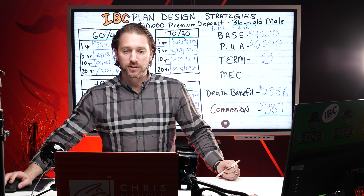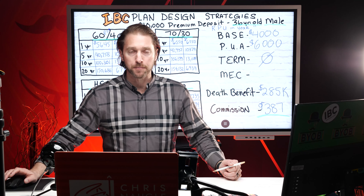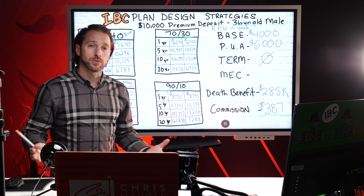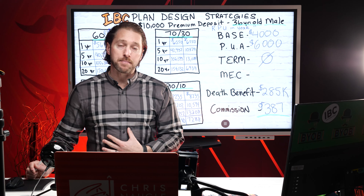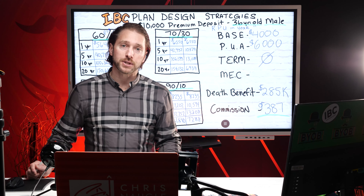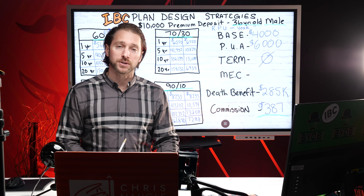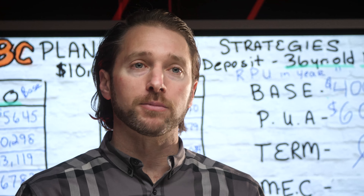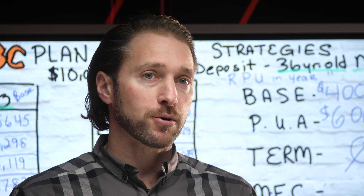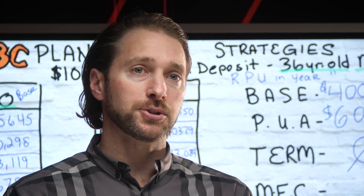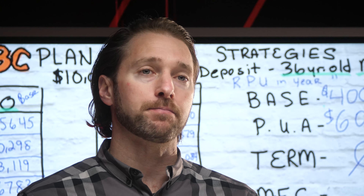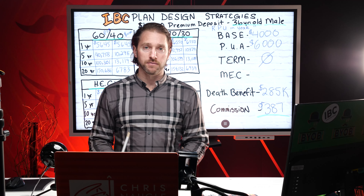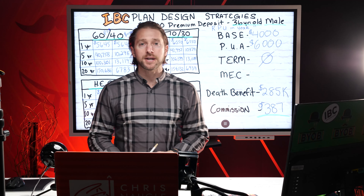Now let's move to the last design, which comes with a lot of controversy. A lot of advisors don't like it. It's not my favorite because I understand the long-term risks, but many advisors think it's the greatest thing because it gives the best performance across the board. However, that performance comes with more risk and potentially more fluctuation in the future, because it puts more of the risk on the dividend than on the guaranteed part of the contract. This is called the 90-10.